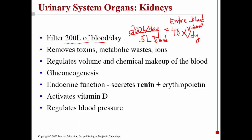That's a tremendous amount of filtering. So why is it being filtered? Well, partly to remove toxins, metabolic wastes, and ions from the blood. The kidney also regulates the volume of your blood and its chemical makeup — for example, it maintains the proper balance between water and salts, and also between acids and bases. In regulating blood volume and chemical makeup, the kidney also regulates your blood pressure.